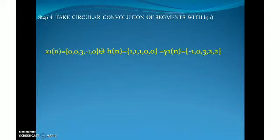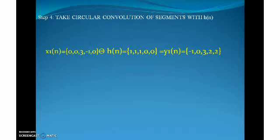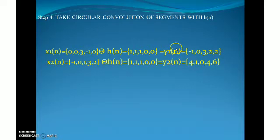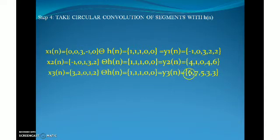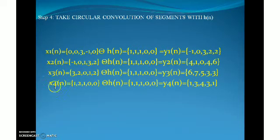In step four, I am going to take the circular convolution of the newly formed segments with my new h(n). I have already explained how to perform circular convolution in an earlier video, so please check that video. Circular convolution can be easily performed using a matrix method. Here I have done the matrix method circular convolution and will show the results directly: x1(n) ⊛ h(n) gives y1(n), x2(n) ⊛ h(n) gives y2(n), x3(n) ⊛ h(n) gives y3(n), and x4(n) ⊛ h(n) gives y4(n).